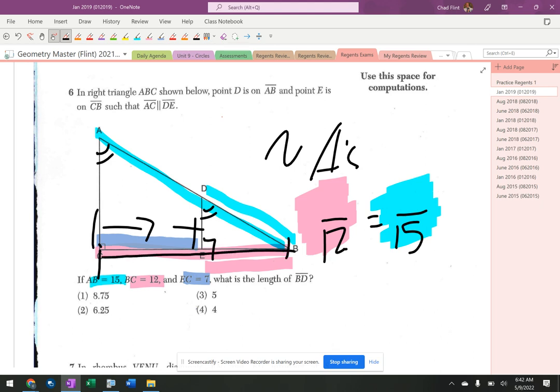This whole thing is 12. That means this top piece is 5, because 7 and 5 is 12. That's 5.